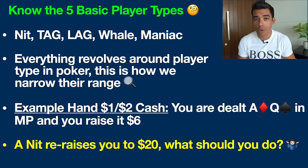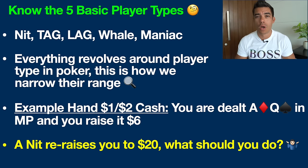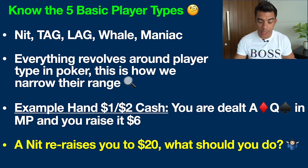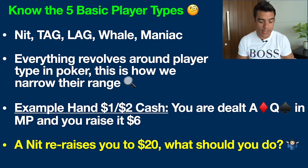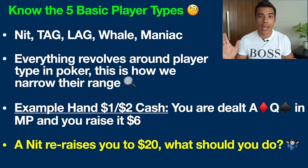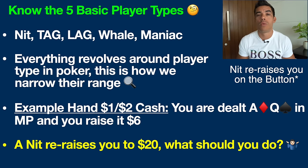Let's jump into an example from a $1/$2 cash game — this will apply if you play tournaments as well. You're dealt ace-queen offsuit, ace of diamonds, queen of spades. In middle position, you raise to $6. And a Nit re-raises you to $20 on the button. What should you be doing?